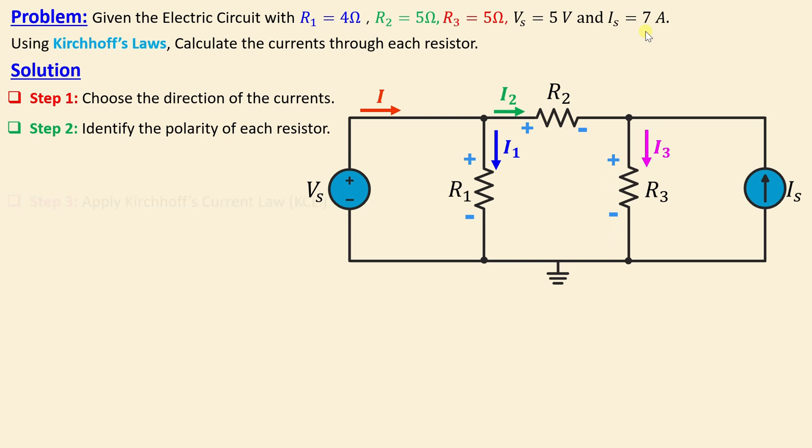We go now to step number 3 is to apply Kirchhoff's current law KCL. We can see at node A that I entering the node and I1 and I2 leaving the node. Then we can write KCL at A, I is equal to I1 plus I2.